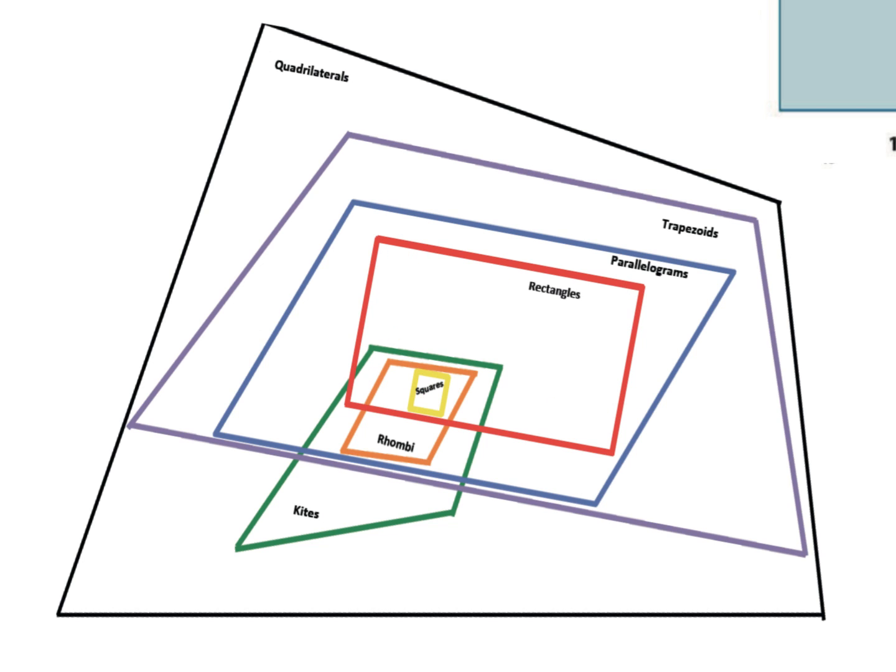So you can see that quadrilaterals being out here are the most general, and then as we move in, we get more and more specific, so that kites are kind of this funky figure that kind of cut across a variety of classifications. But the square, you could see, is probably the most specific, because it's right in here. It's the most nested inside figure.